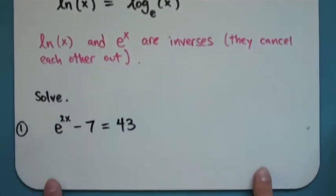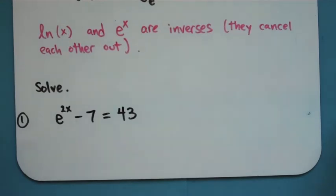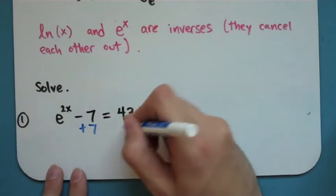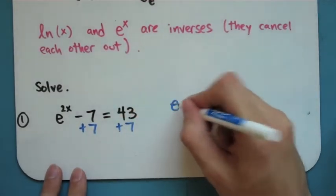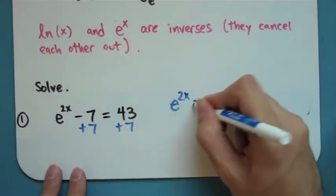So if we look at a problem like this that we're asked to solve, we want to actually get x by itself here. So the first thing we would do is we would add 7, nothing too wild there. We get e to the 2x equals 50.